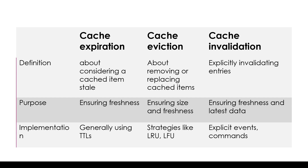Cache invalidation generally responds to changes in the underlying data. For example, we have an employee database and a cache storing frequently accessed employee objects. If one of the employee objects changes in the database, that would trigger a notification and we may choose to proactively invalidate the cached entry, which will trigger a refresh — meaning the cache will now read the updated information of that employee from the database. So here we are invalidating the cached entry explicitly and proactively to ensure freshness of the data.